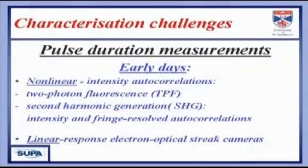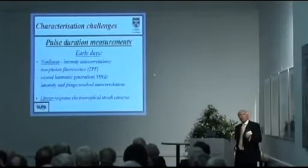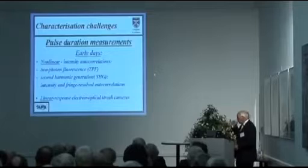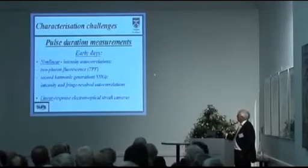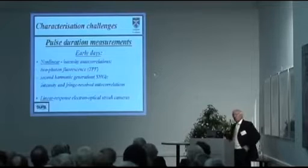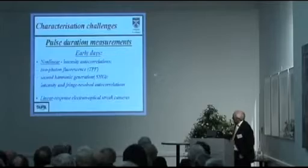In the early days, making pulse duration measurements was difficult, and the idea was to use nonlinear techniques to allow the pulse to measure itself essentially. The typical early techniques were two-photon fluorescence or second harmonic generation, either just intensity or fringe-resolved. As Colin mentioned, there was quite a lot of work on development of fast electro-optical streak cameras, because although the photodiode-oscilloscope combination didn't have enough resolution, it had the attraction of a linear response device so you could look at background to pulses.